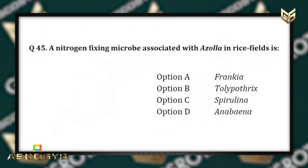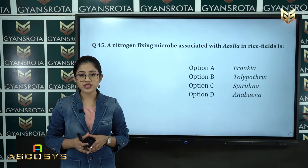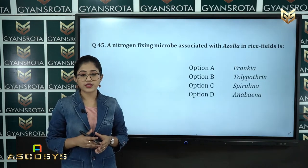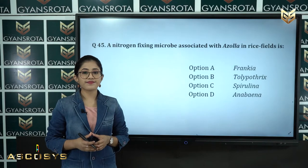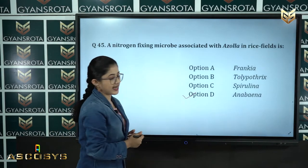Question 45: A nitrogen-fixing microbe associated with Azolla in rice fields is option A: Frankia, option B: Tolypothrix, option C: Spirulina, option D: Anabaena. The correct answer is option D, Anabaena, the nitrogen-fixing microbe associated with Azolla in rice fields.